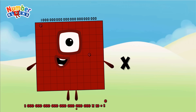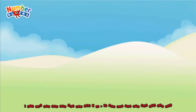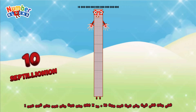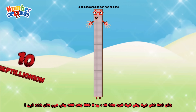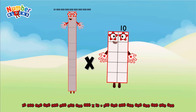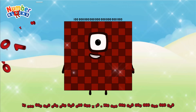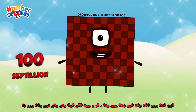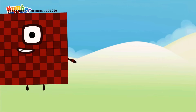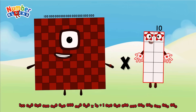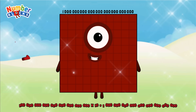1 subtillion multiplied by 10 equals 10 subtillion. 10 subtillion multiplied by 10 equals 100 subtillion. 100 subtillion multiplied by 10 equals 1 octillion.